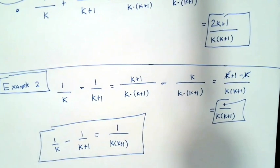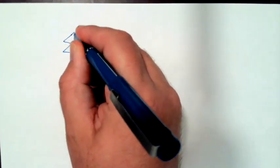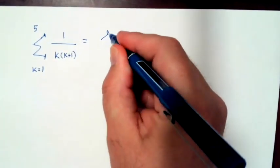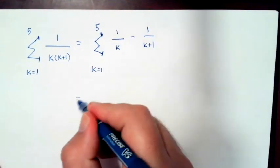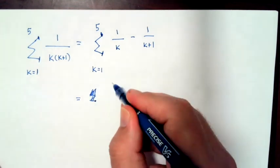This makes it possible to simplify a certain sum. Let's look at the sum from k equals 1 to 5 of 1 over k times k plus 1. First we need to recognize that we can rewrite 1 over k times k plus 1 as 1 over k minus 1 over k plus 1, because we just did that algebraically.